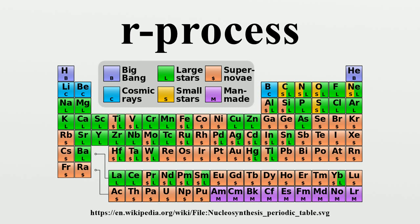While the S process creates an abundance of stable nuclei with enclosed neutron shells, the R process creates an abundance of nuclei about 10 atomic mass units below the S process peaks as a result of the decay back towards stability.